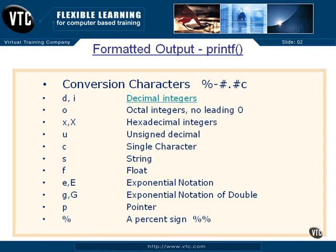If you use an E or an uppercase E, that will give you exponential notation with the E plus and the power to raise a number. It can print very small or very large numbers in less space with exponential notation. Lowercase g or uppercase G is to print exponential notation of a double value, which would be a very large and highly precise value, as we saw when we looked at our variable types earlier.